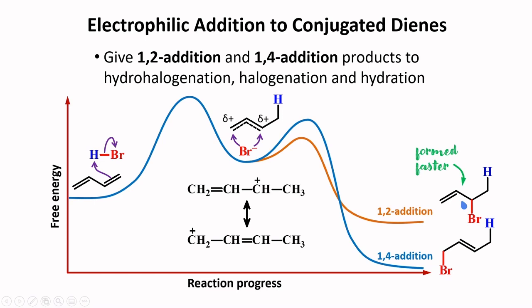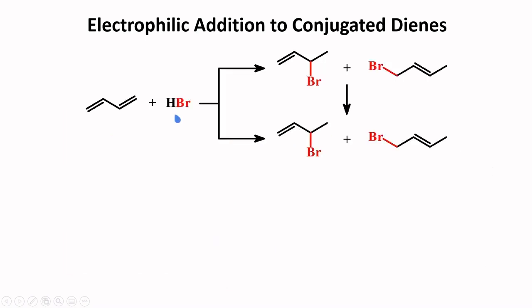If we control the temperature of the reaction, a lower temperature will favor the formation of the 1,2-addition product. A higher temperature, however, will favor the formation of the more stable 1,4-addition product. Thus, upon reaction of HBr with 1,3-butadiene at −80°C, 80% of the product results from 1,2-addition. At higher temperature, the preference is reversed and the 1,4-addition product is more preferred.